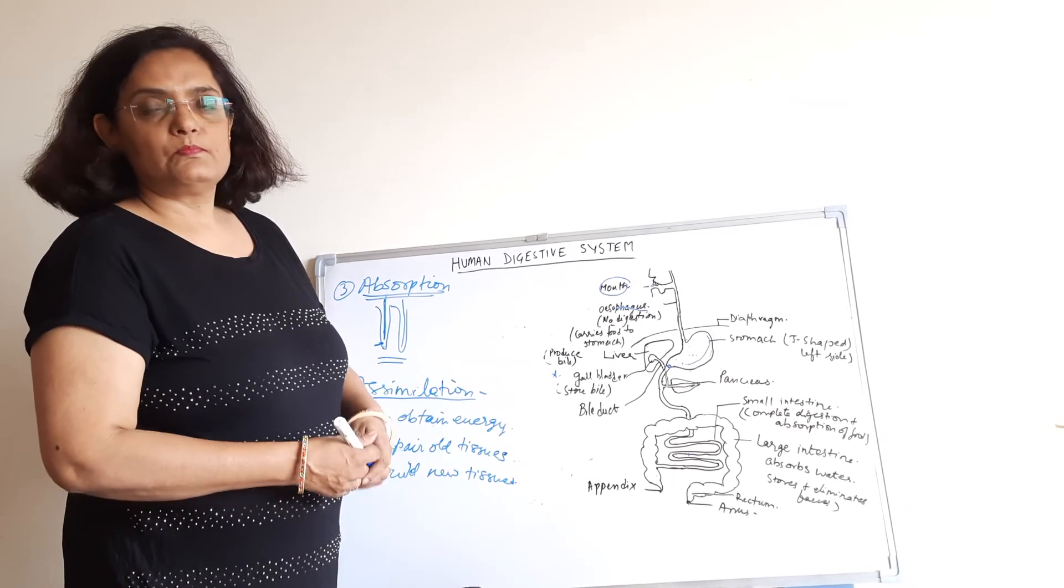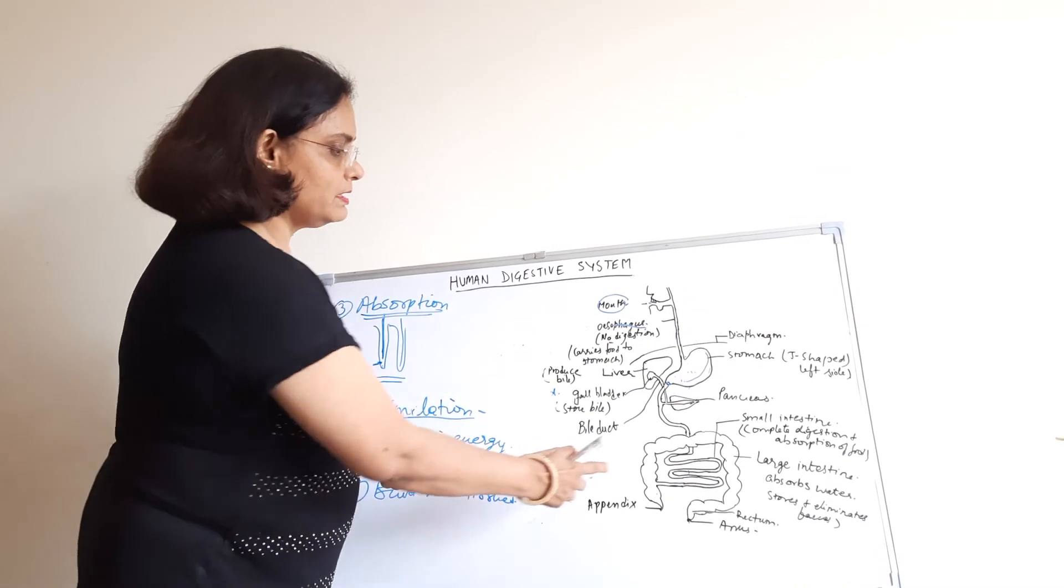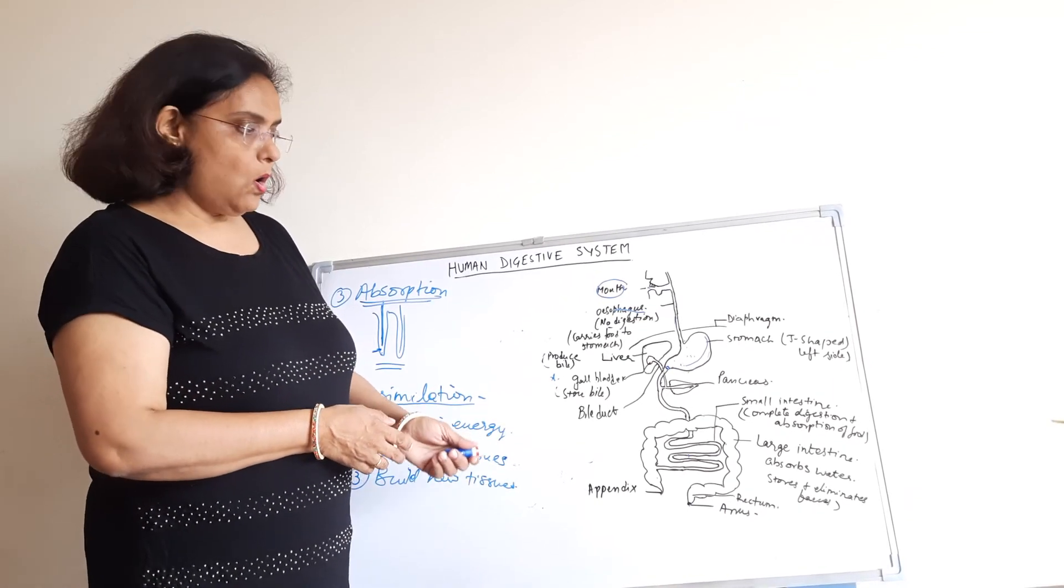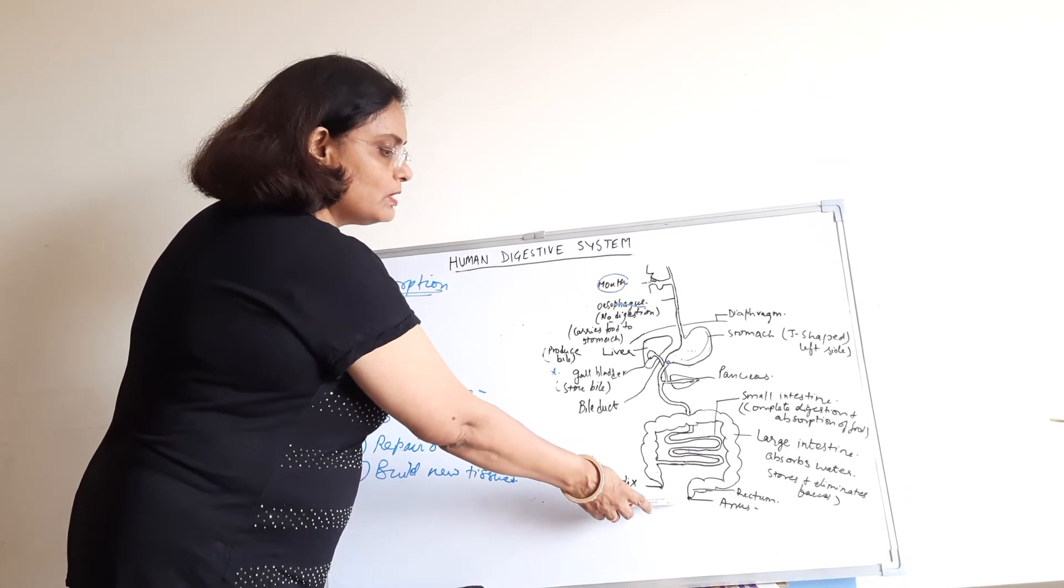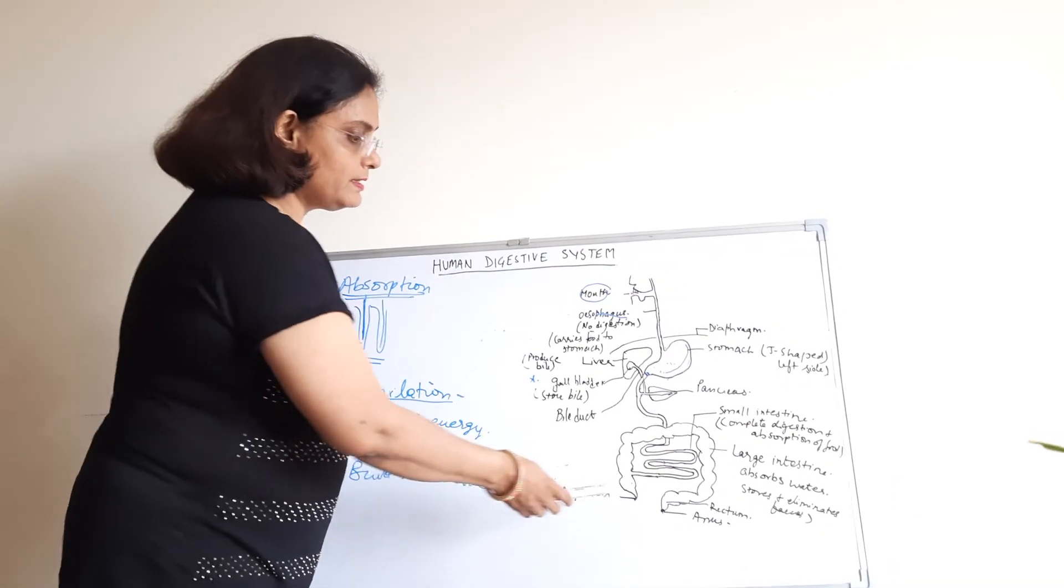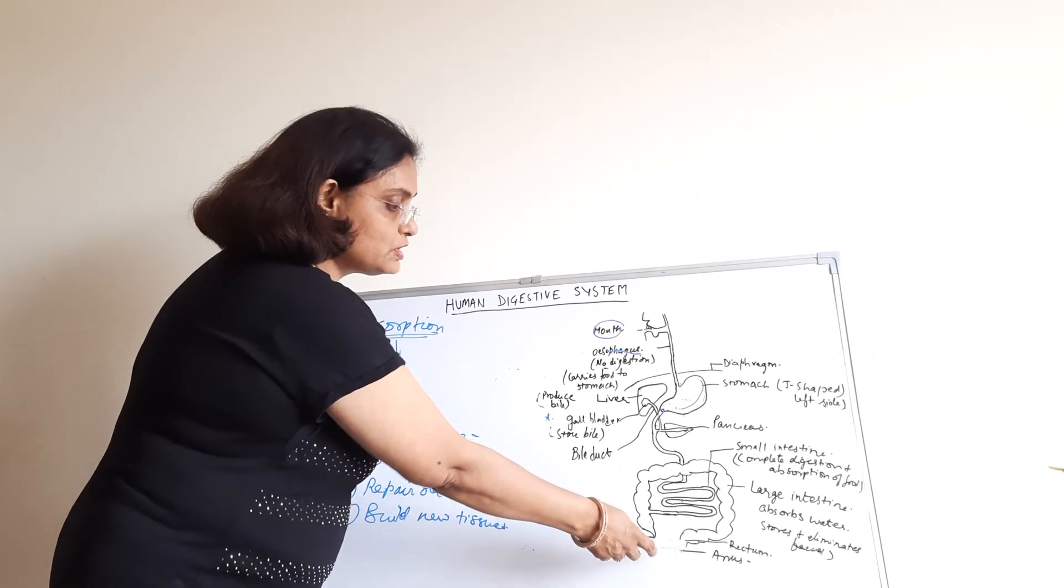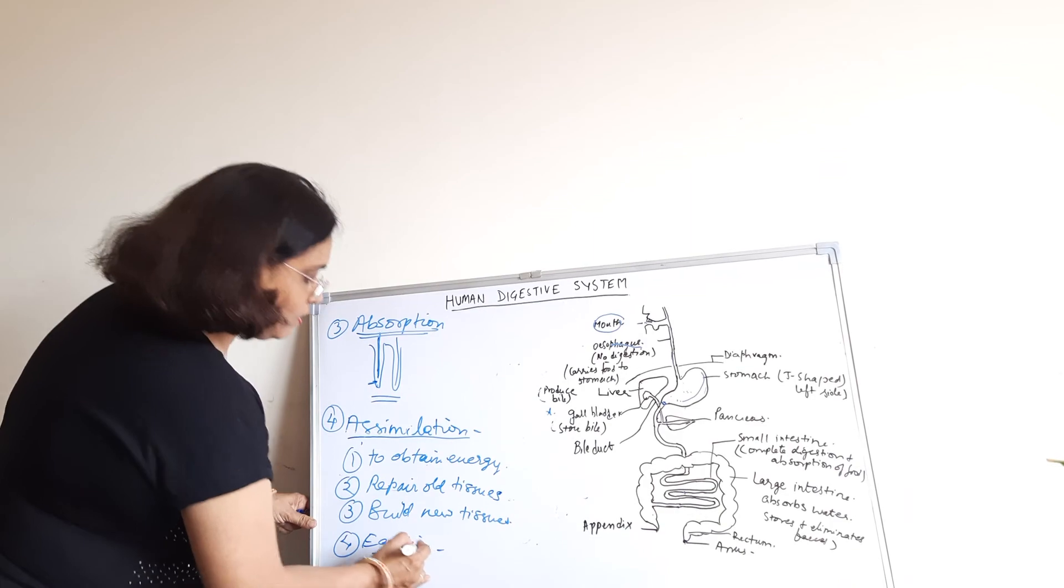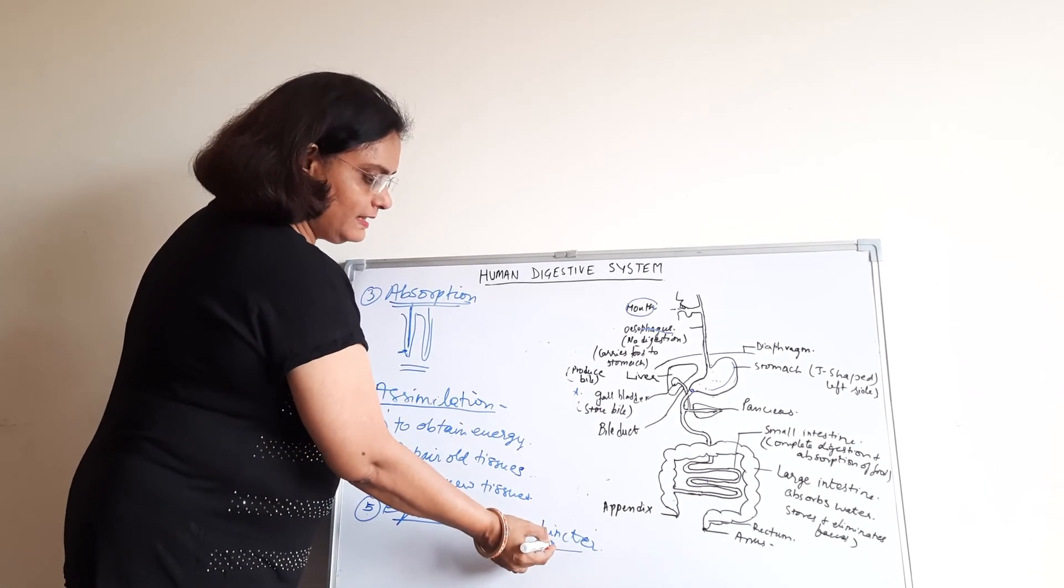The undigested part of food goes into the large intestine. In the large intestine, absorption of water takes place and the undigested food is in solid form and it is thrown out of the body through the anus. It is temporarily stored in the rectum for some time and the anal sphincter controls its ejection. So the last step is egestion. Egestion is the removal of the undigested food.